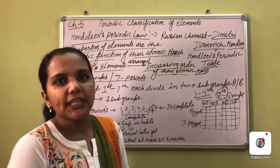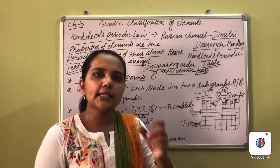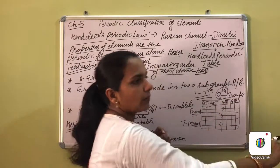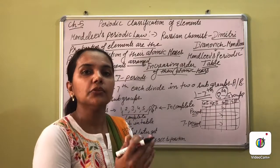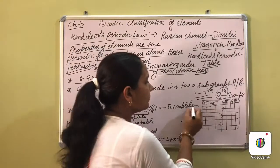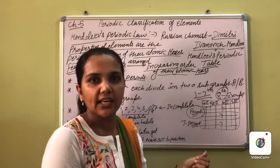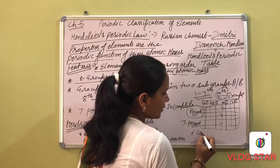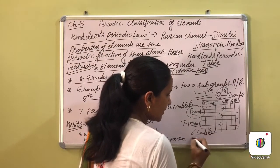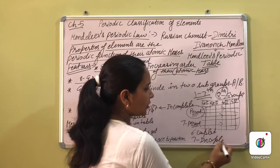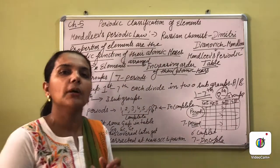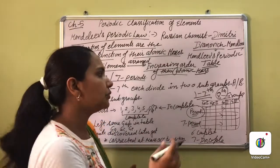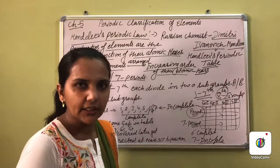The horizontal columns were named periods, and there were seven periods in total. Six of those periods were complete, but only the seventh was incomplete, because the elements beyond that had not yet been discovered at that time.